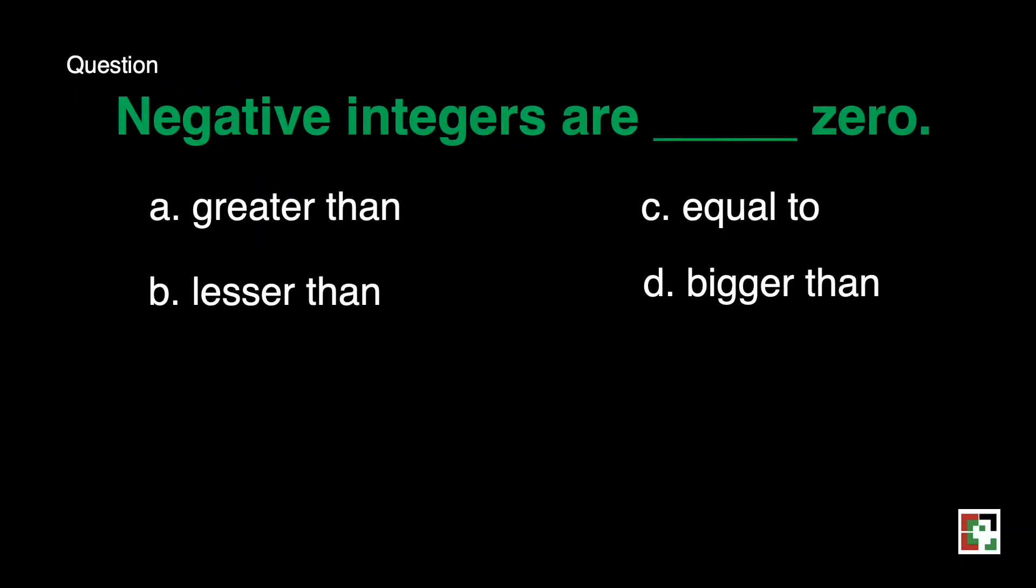Our first question: Negative integers are blank zero. A, greater than. B, lesser than. C, equal to, or D, bigger than. Our answer is B, lesser than. Why is that so? Because we can find negative integers before zero, or at the left side of the number line, signifying that it is less than compared to zero.